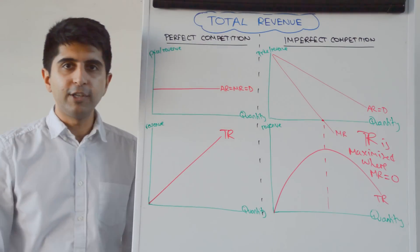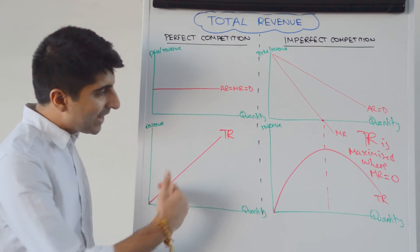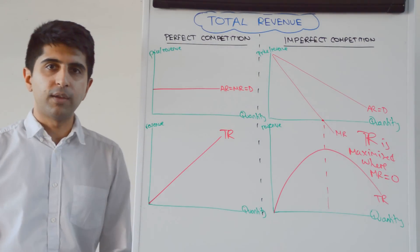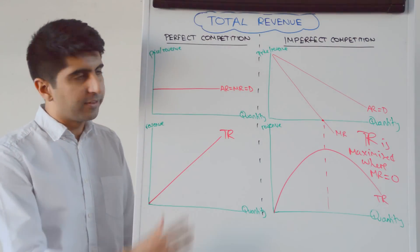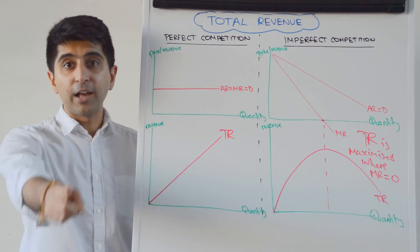You draw it like that for total revenue in imperfect competition, a linear upward sloping line for total revenue in perfect competition. That covers this. Thank you so much for watching, guys. I'll see you all in the next video.